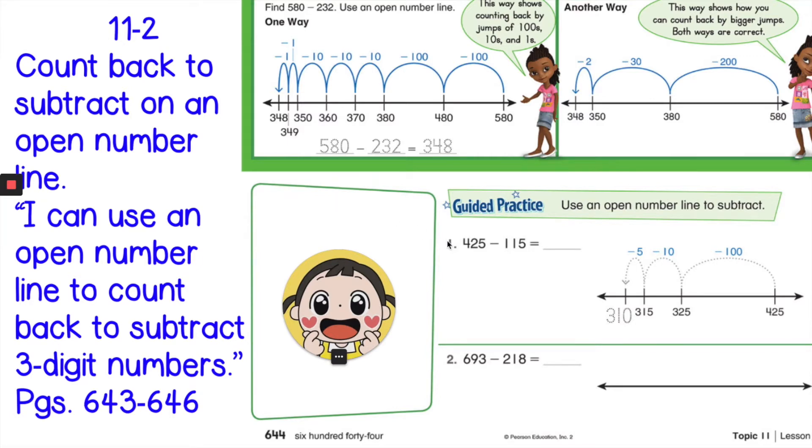Now today you're going to use an open number line to subtract. You start at 425 and you take away 115. So we start at 425, we hop back 100 first, and then you hop back 10, which is the next place value, and then you hop back 5, which is the next place value. And that's how they got 310.